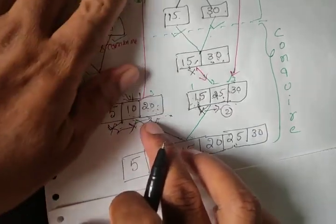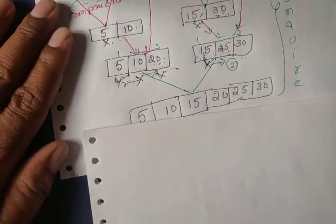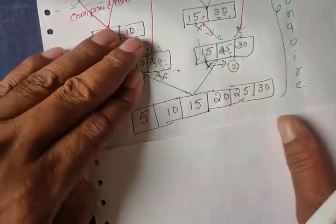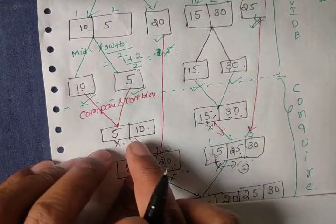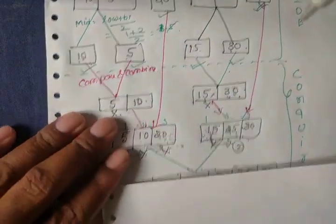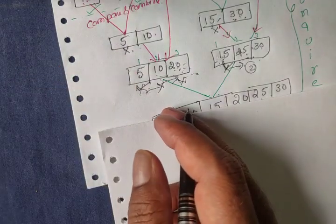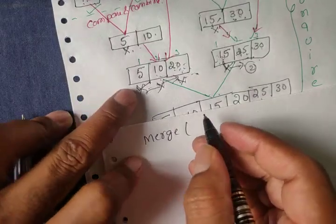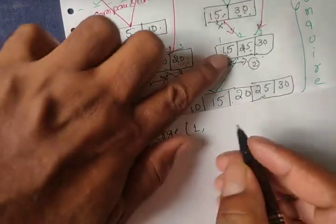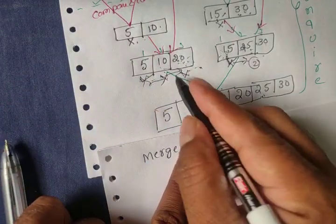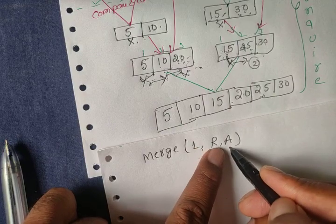First I am writing the merge method for small modules. The merge method takes a left array, a right array, and generates a new array. So the parameters are: left array, right array, and new array A. Then we take n_l = length of left array and n_r = length of right array.